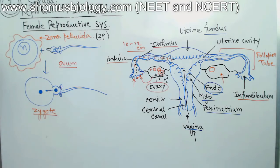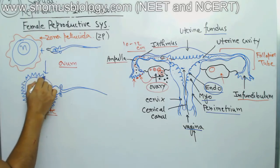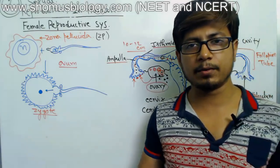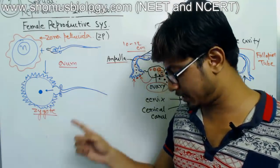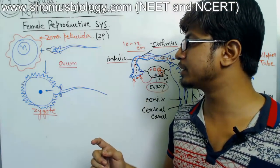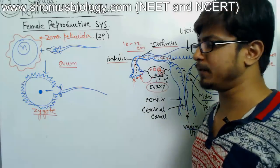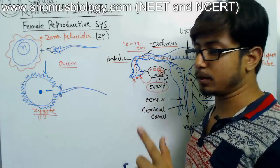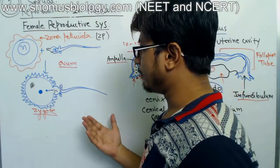Once the sperm fuses with the egg membrane, the cell membrane rearranges and the nucleus from the sperm is transferred inside the egg. Once the transfer is done, the zona pellucida layer is shed and the outer layer undergoes a change — it becomes harder. This is true not only for humans but for many other organisms like sea urchins. This change signals that fertilization is complete and prevents more than one sperm from inserting its nucleus.